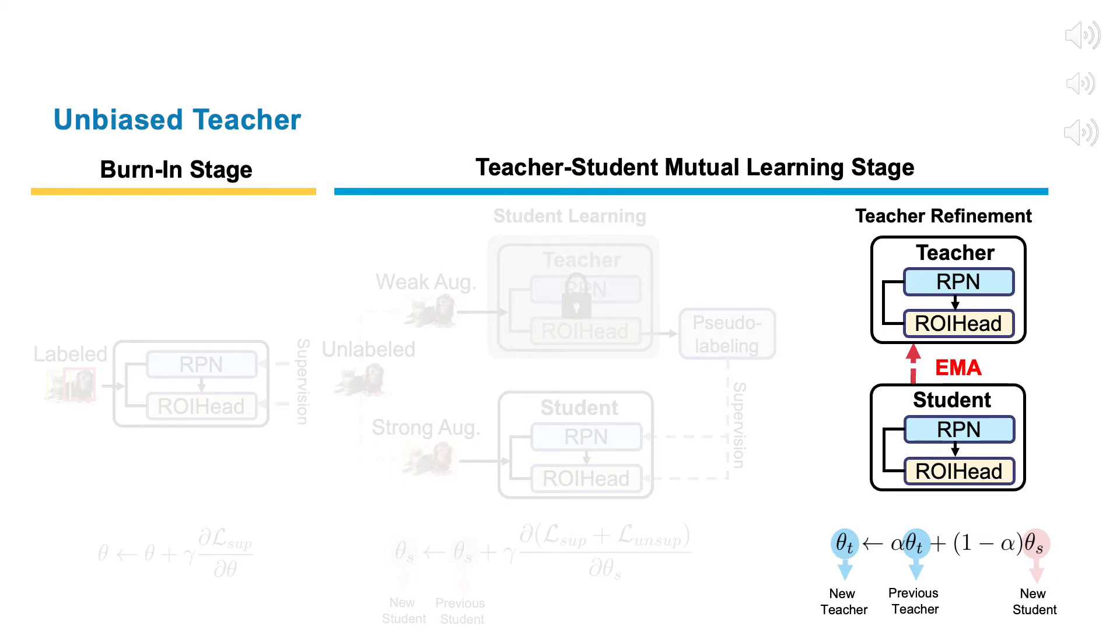In the teacher refinement stage, in order to obtain more stable pseudo-labels, we apply exponential moving average to gradually update the teacher model.